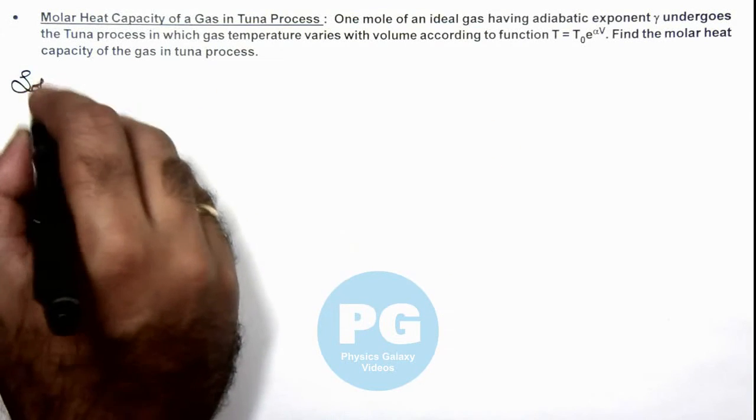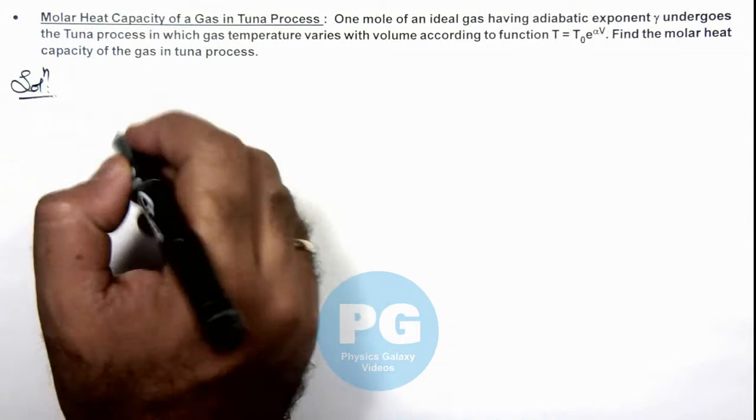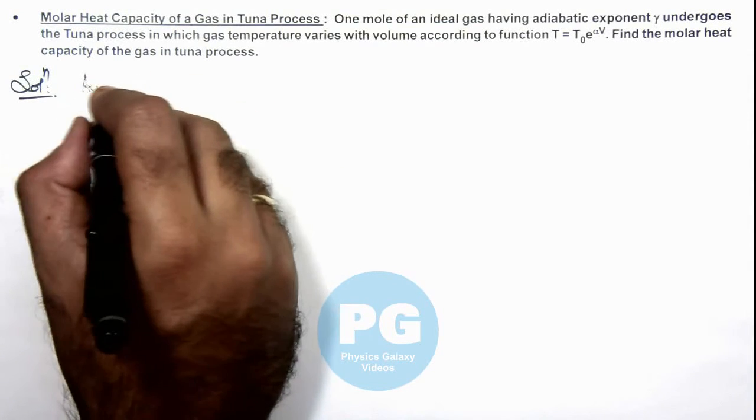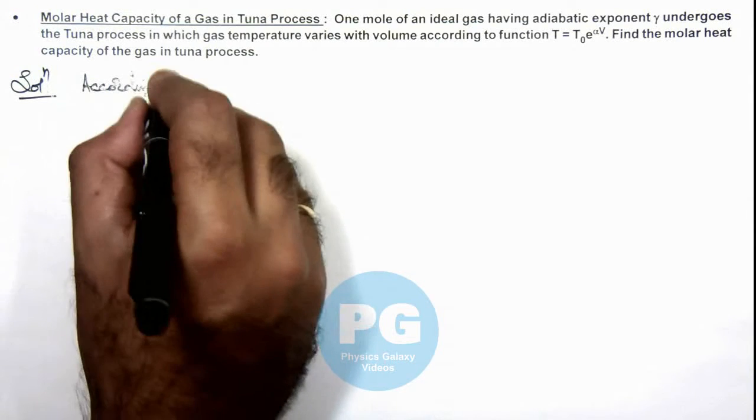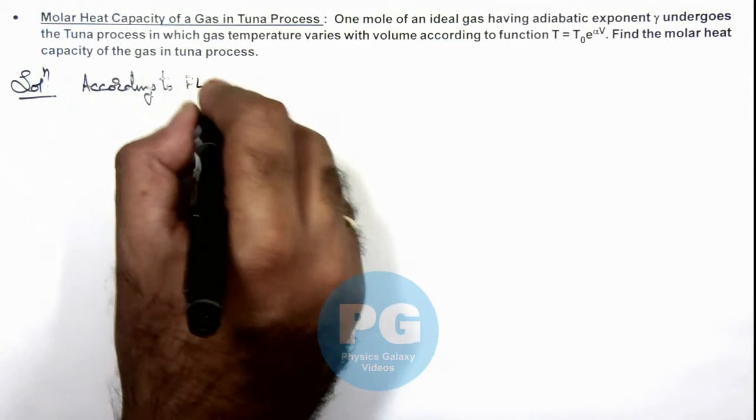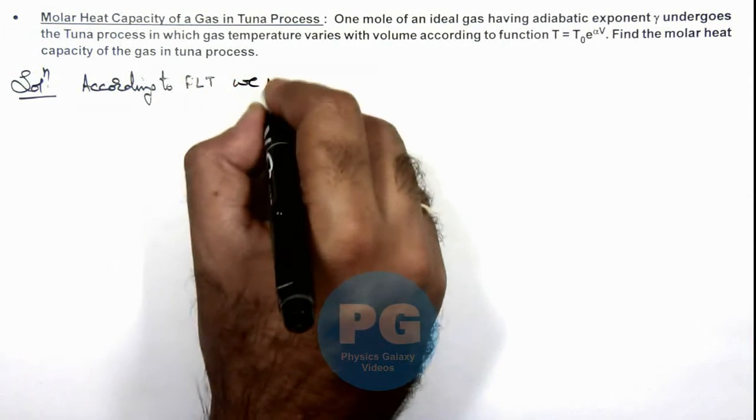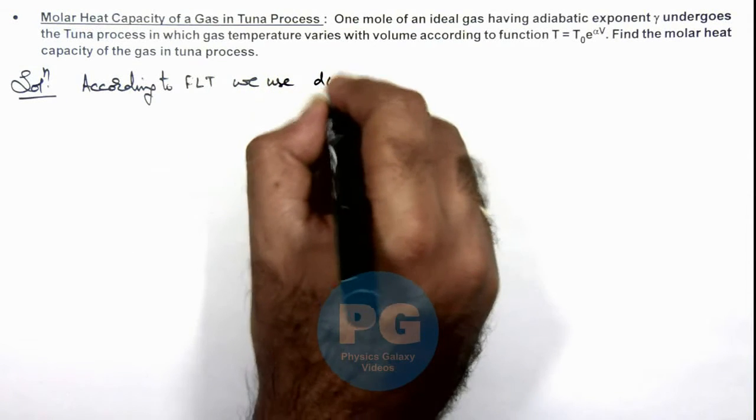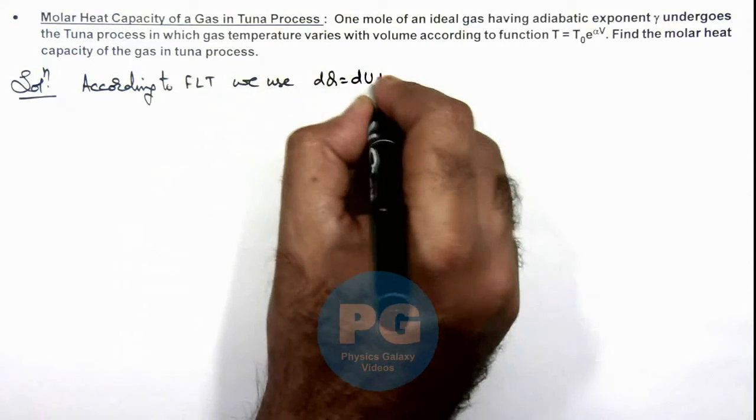So to find the molar heat capacity of the gas, we can simply write according to first law of thermodynamics: dQ = dU + dW.